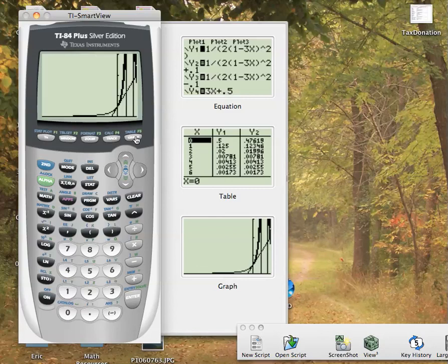But what I want to do is draw a box around the interesting part right in there. That's where our linear approximation works. So I'm going to go zoom. Choose zoom box. That's 1.